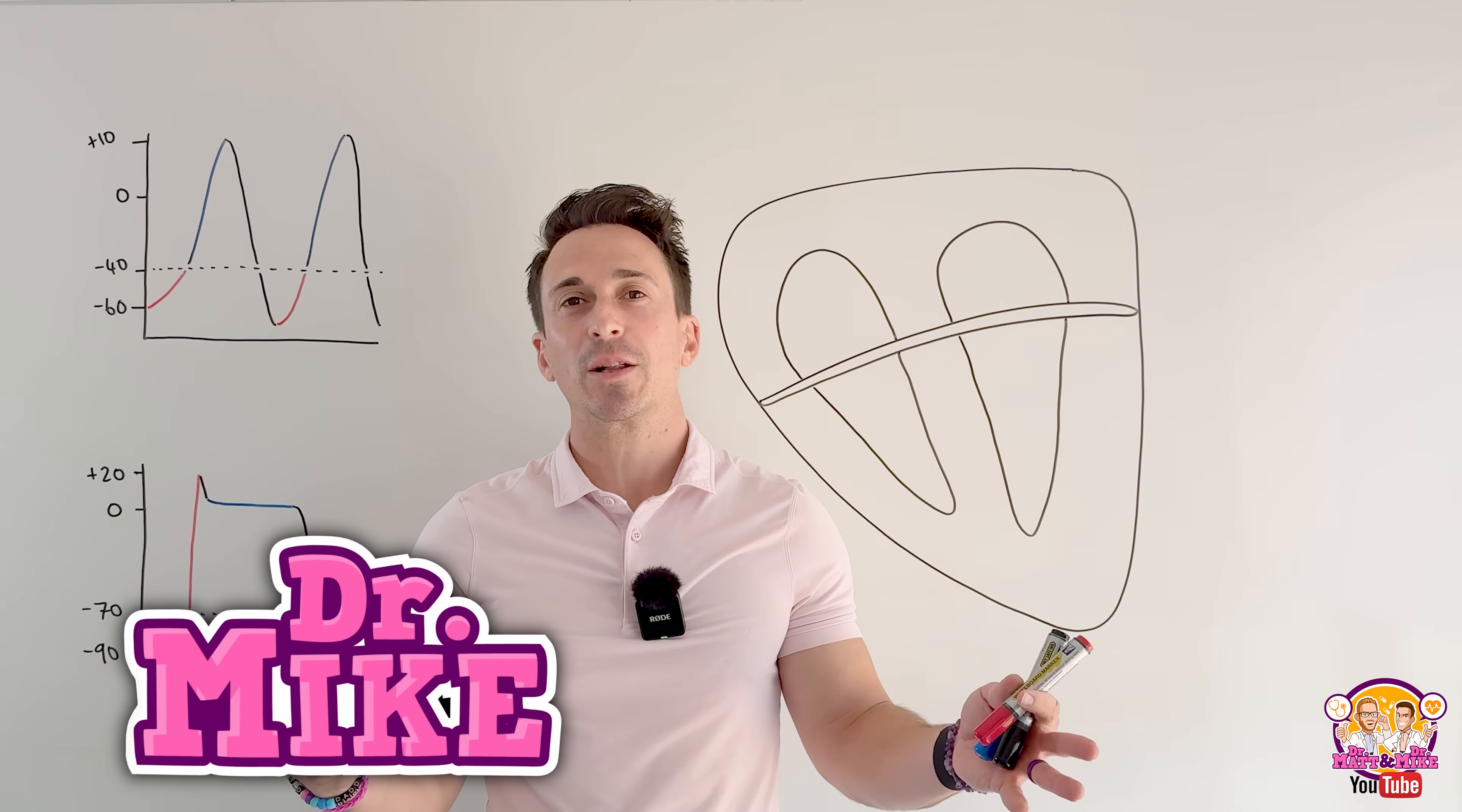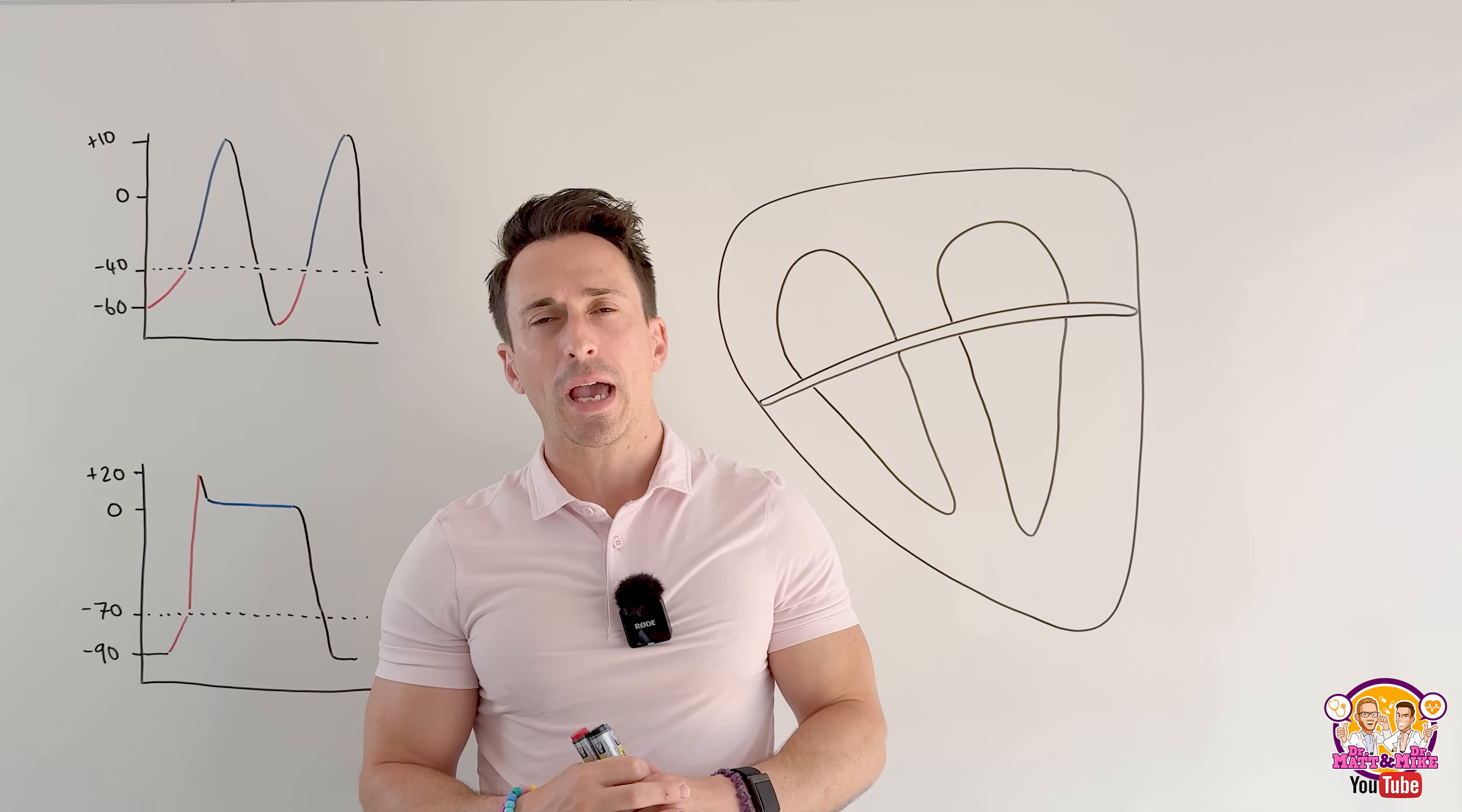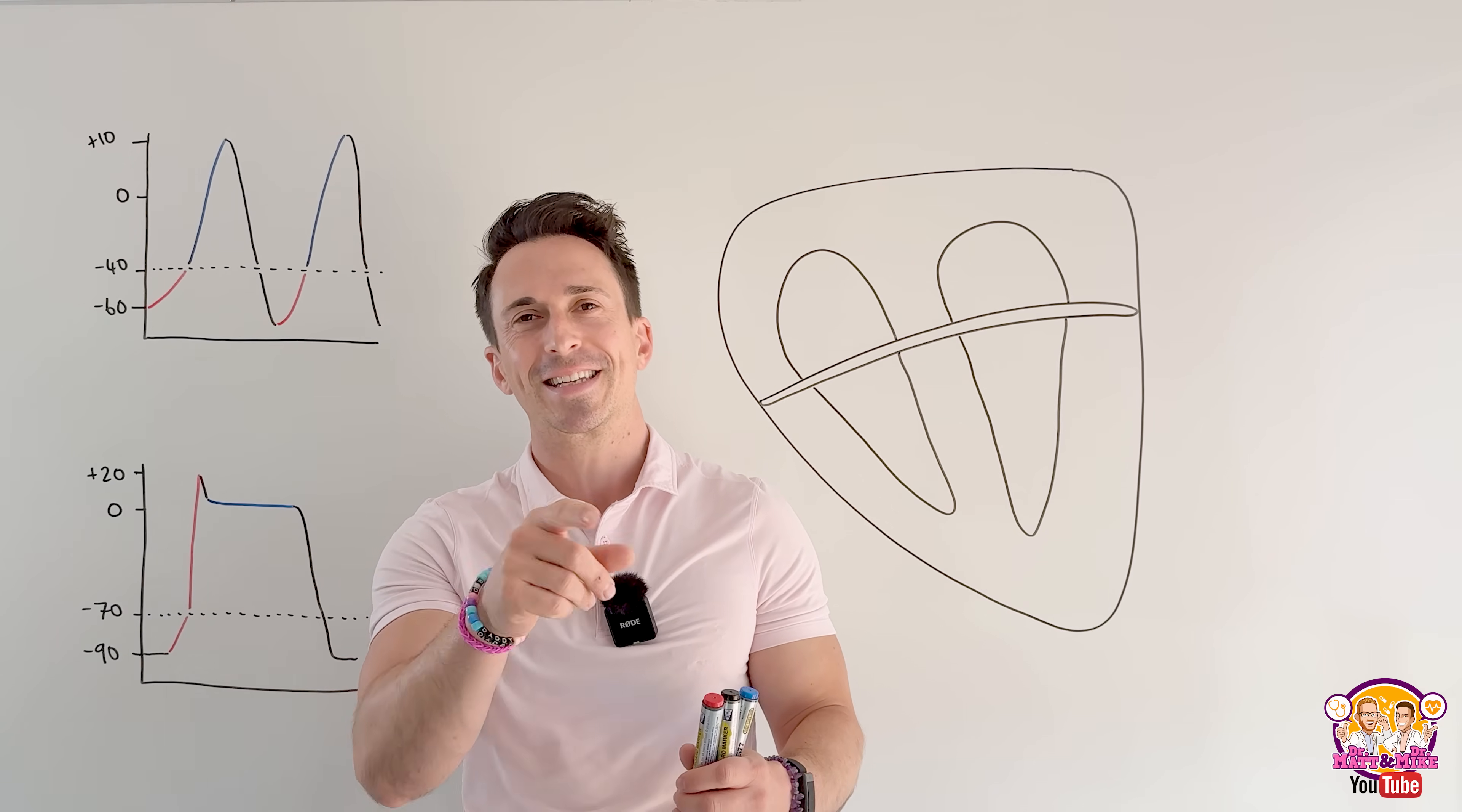Hi everyone, Dr. Mike here. In this video we're taking a look at the cardiac conduction system. What is it that makes the heart beat? Well we know it's an electrical conduction system and in this video we're going to take a look at the names and locations of this electrical conduction system to allow our heart to beat those 100,000 times per day or around about three billion times in our lifetime. Let's take a look.